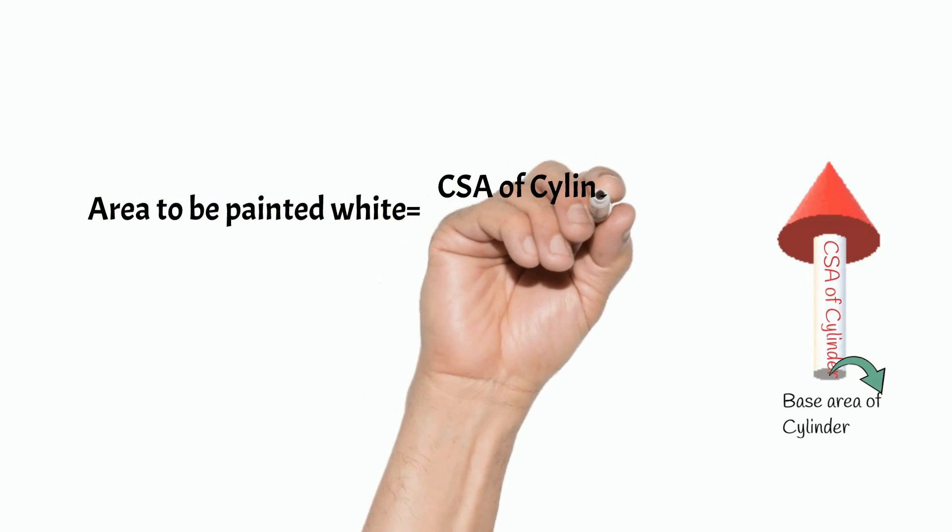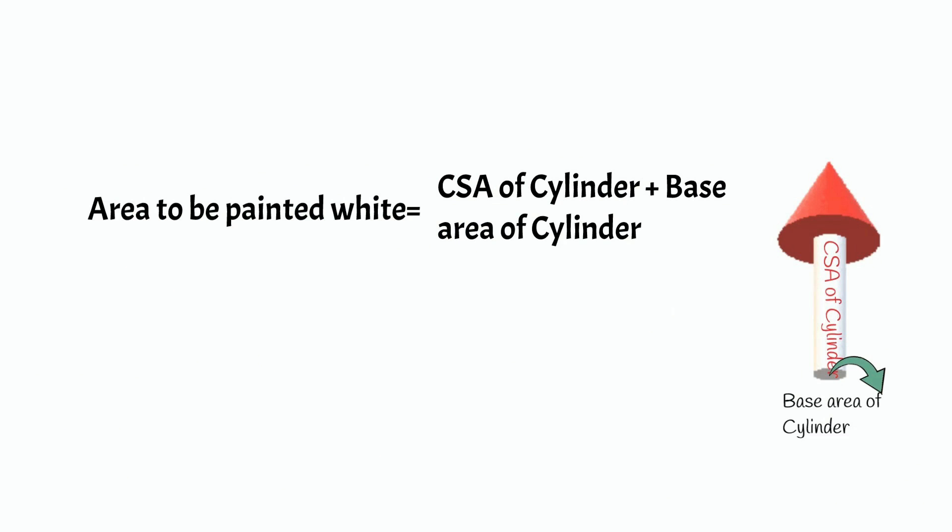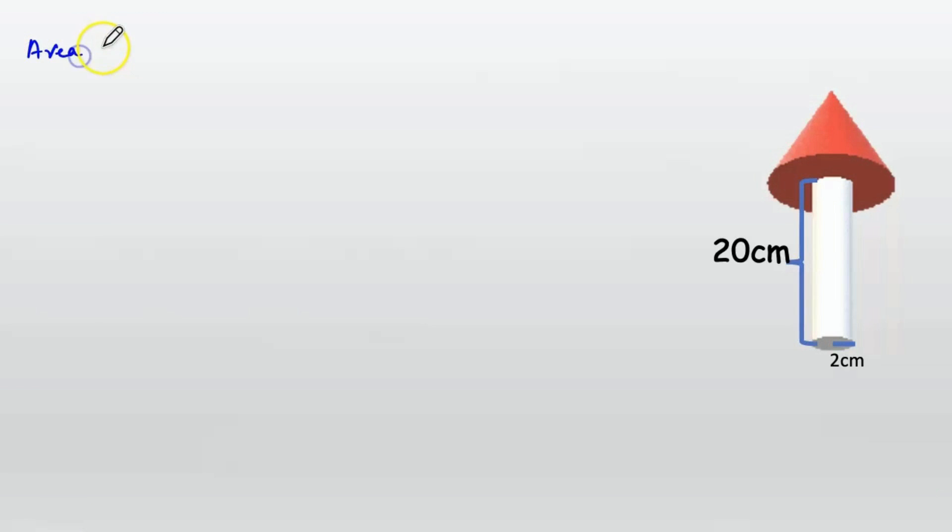Area to be painted white equals curved surface area of cylinder plus base area of cylinder. So area to be painted white equals CSA of cylinder plus base area of cylinder.